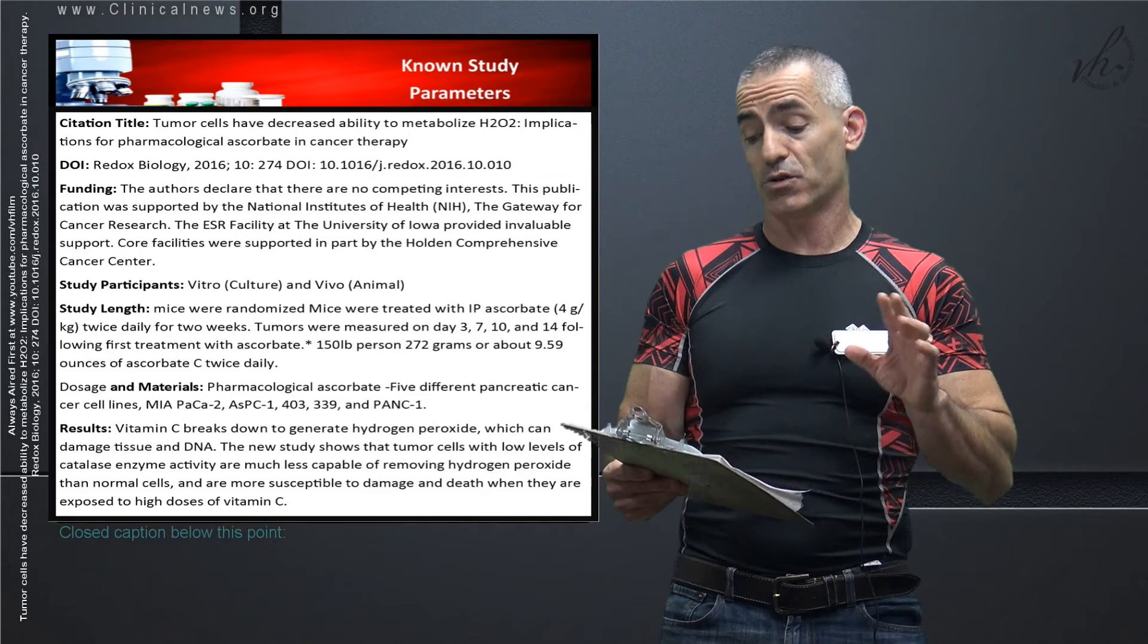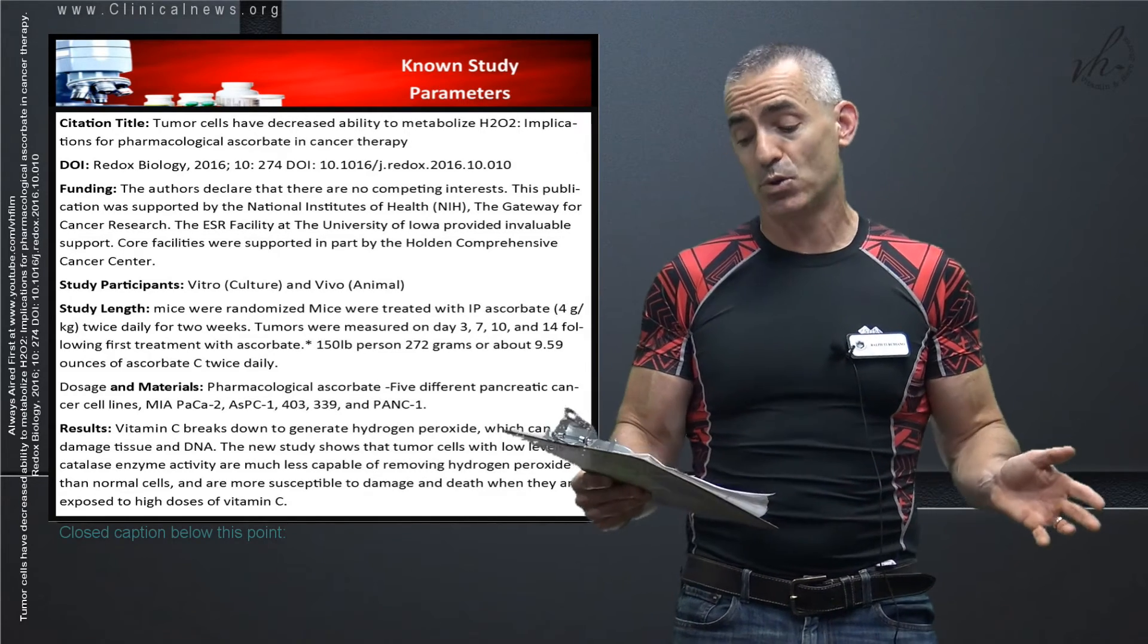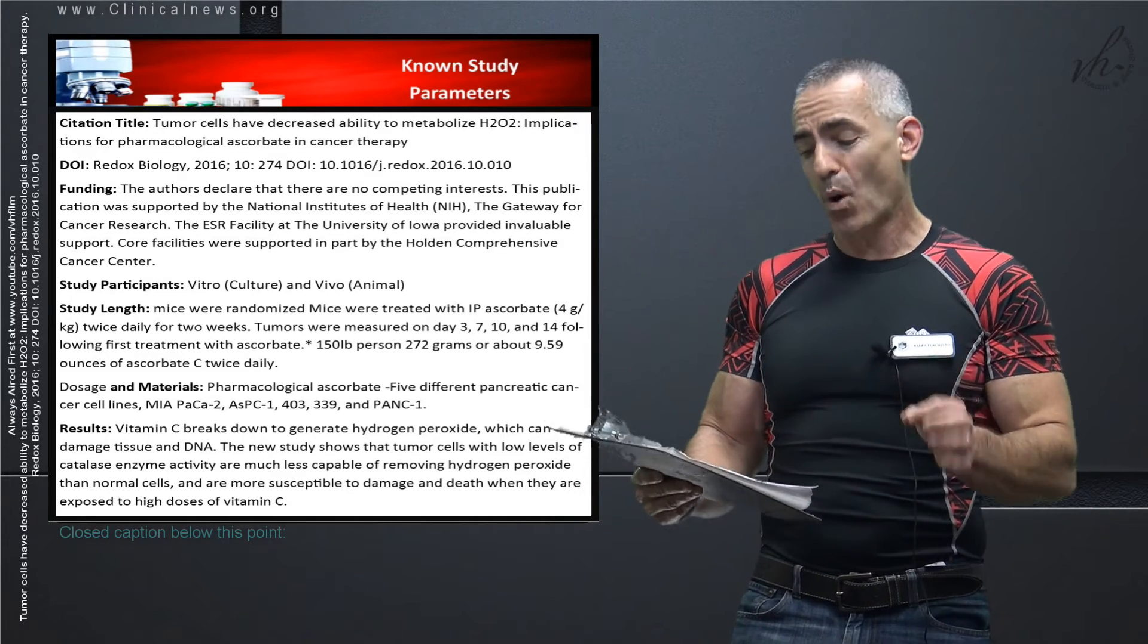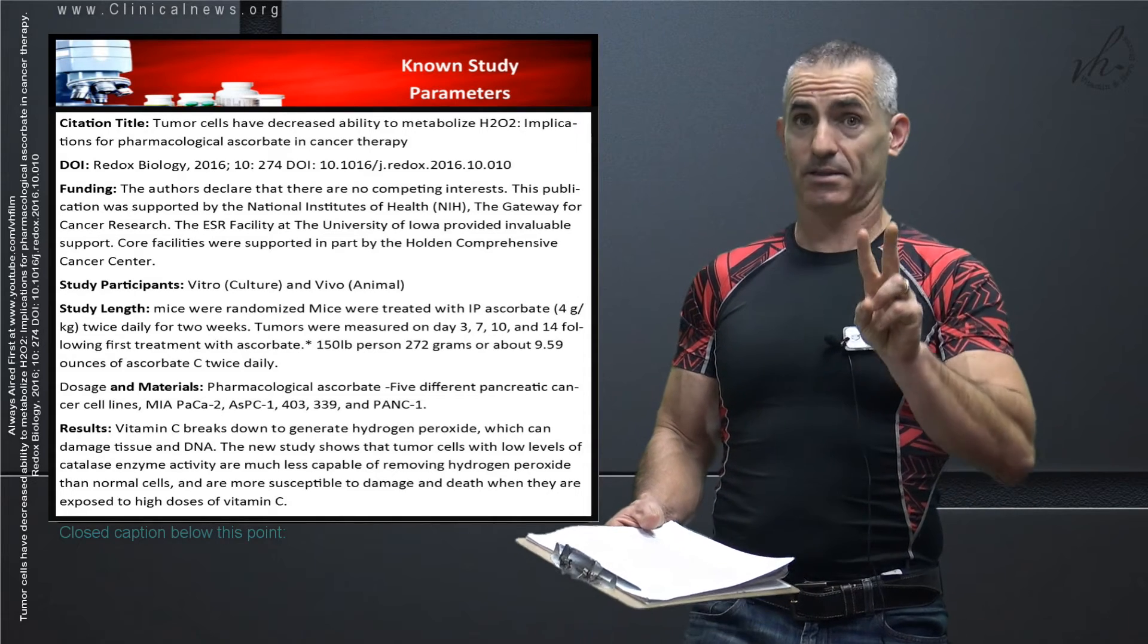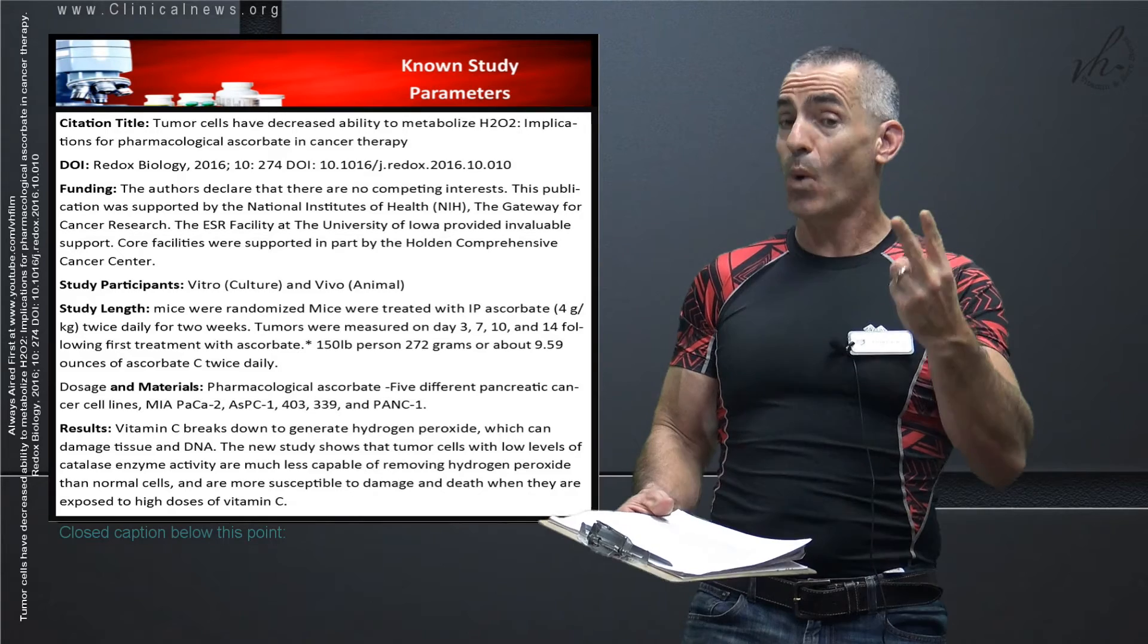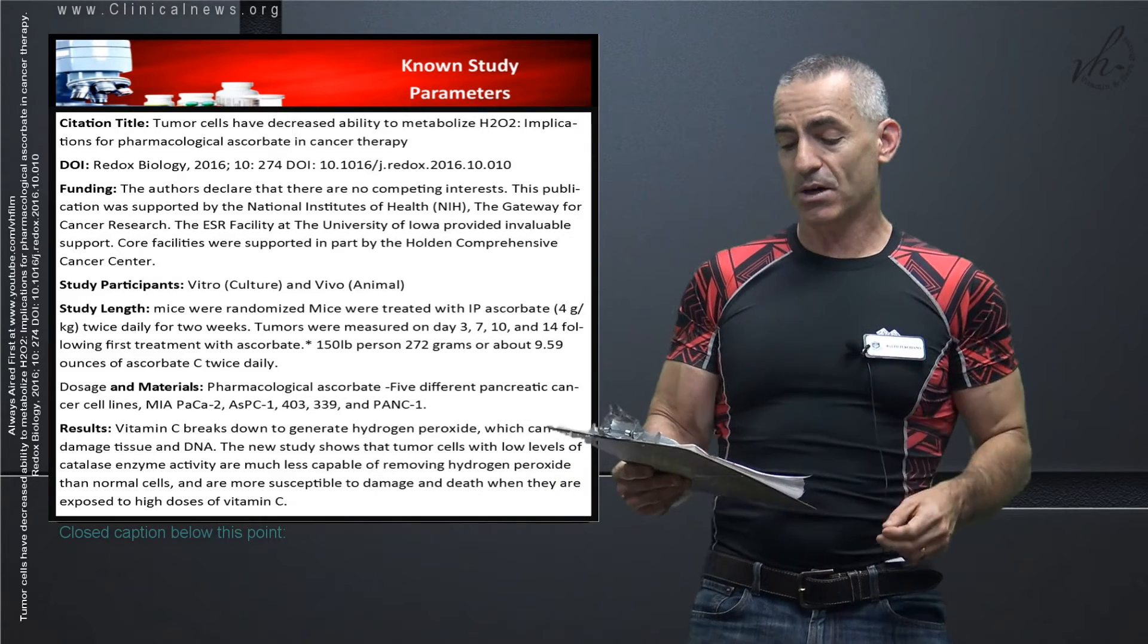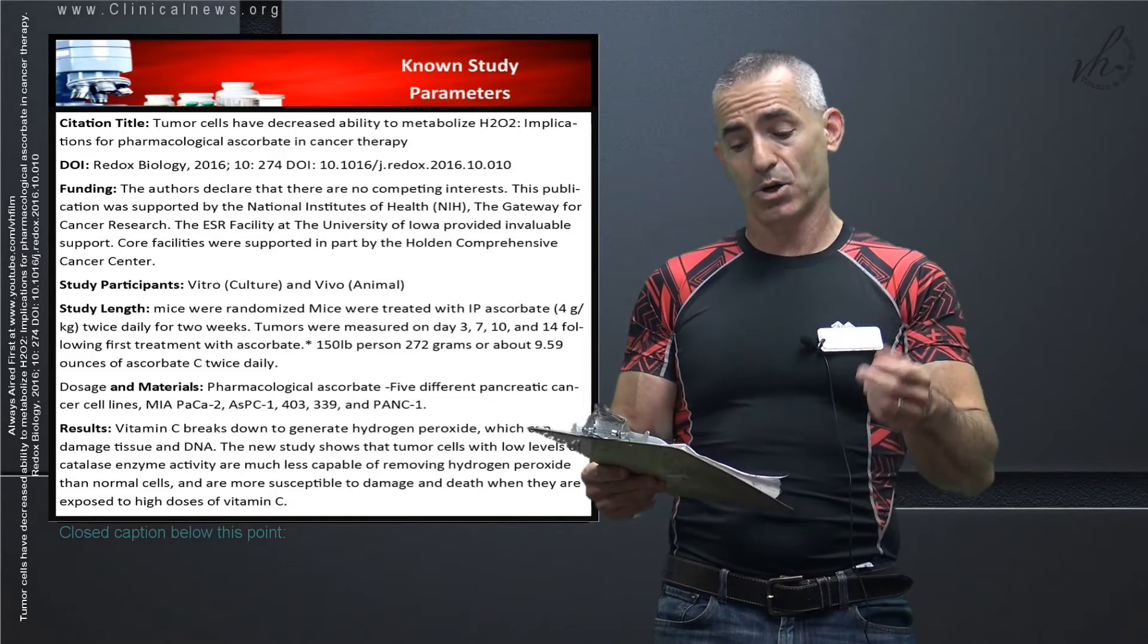Now to give you an idea how much vitamin C that is intravenous, for a 150 pound individual that would be about 272 grams or about 9.59 ounces of ascorbate, vitamin C, twice daily. Not just once, so 9.59 ounces twice daily. Dosage material, ascorbate, five different pancreatic cancer cell lines they utilized it with.